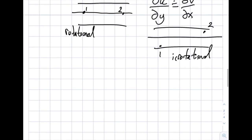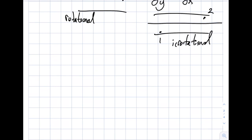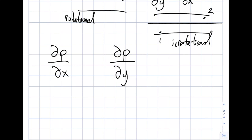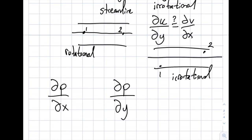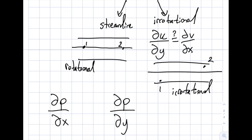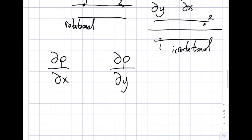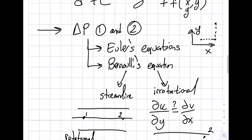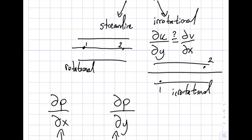One final point: if I ask you for the pressure gradient in the x-direction or the y-direction at a specific point, even if the flow is irrotational and you could technically use Bernoulli's equation, you should not. The Bernoulli equation gives you the pressure p directly — but for the gradient ∂p/∂x or ∂p/∂y, those terms appear directly in the Euler equation. I highly recommend using Euler's equation in this case. I sometimes see students using Bernoulli for this — I would not recommend it.